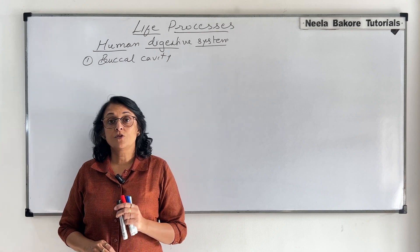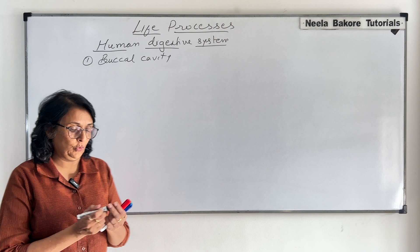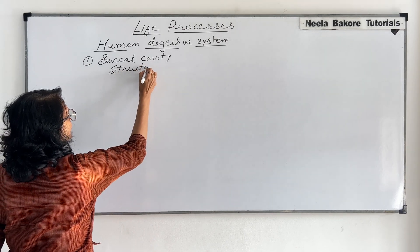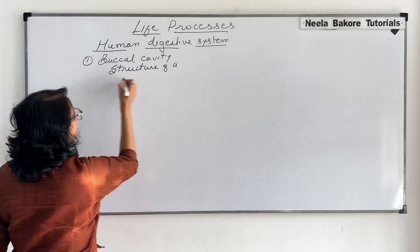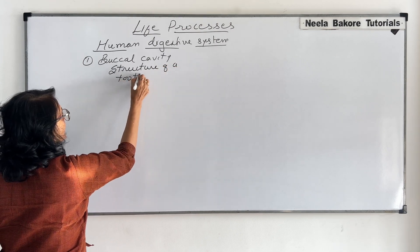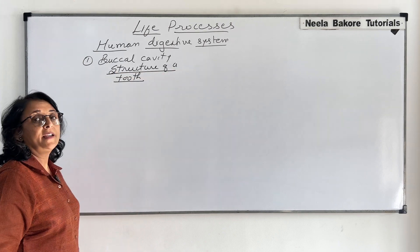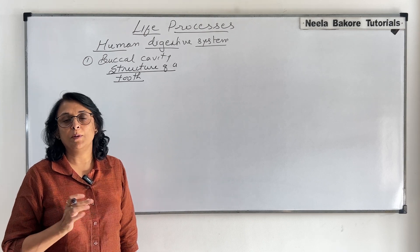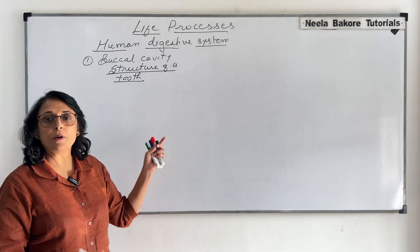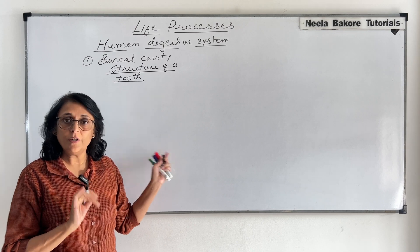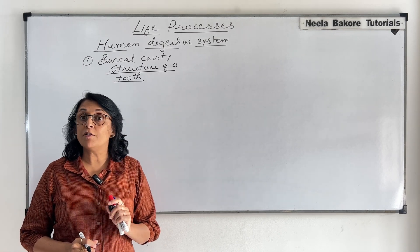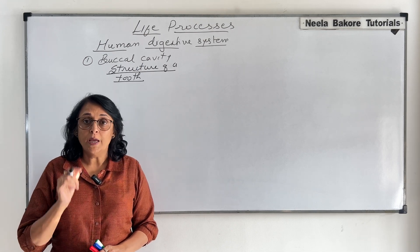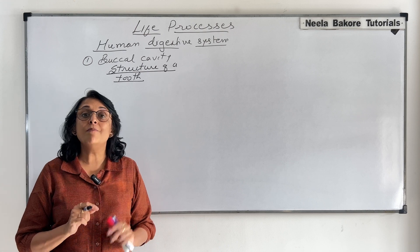Let us discuss the structure of a typical tooth. We know that there are different types of teeth in our jaw: incisors, canines, premolars, molars. We are talking about a typical tooth structure and our teeth are fitted in our jawbone. The lower jaw is known as mandible, the lower jawbone, and the upper jawbones are called maxilla.